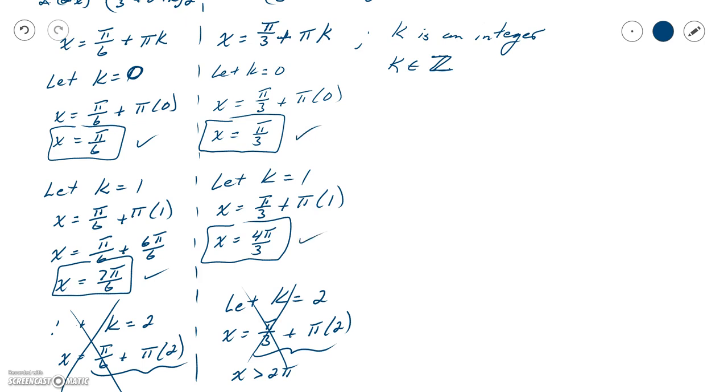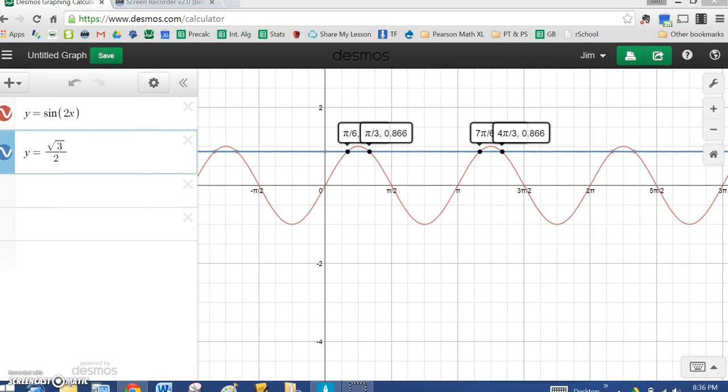So here are my other two answers, π over 6, 7π over 6, π over 3, 4π over 3. If I go back to the graph here, there's my π over 6, there's 7π over 6, there's π over 3, and there's 4π over 3. So we're getting the same answer in both cases, graphing and algebraically.